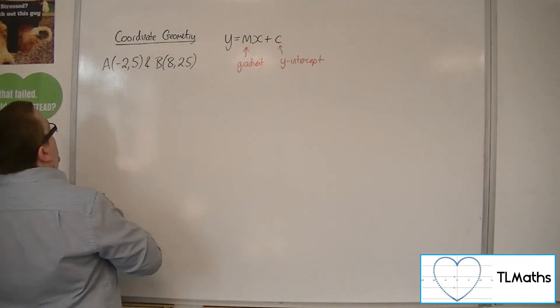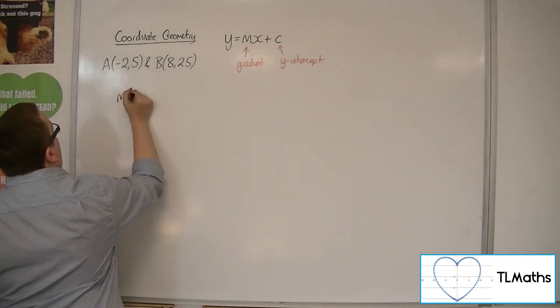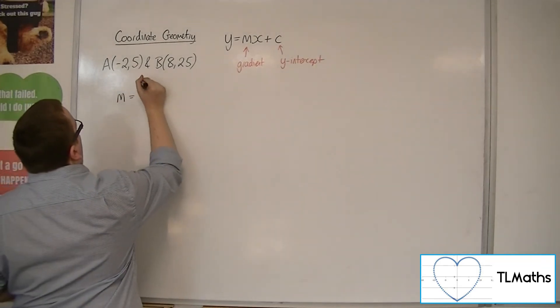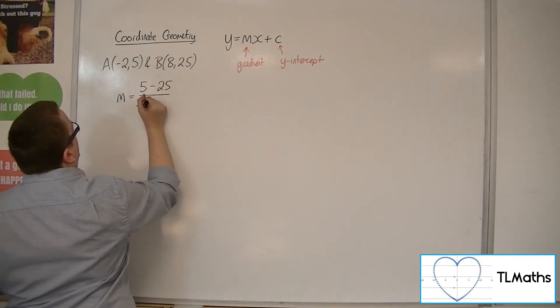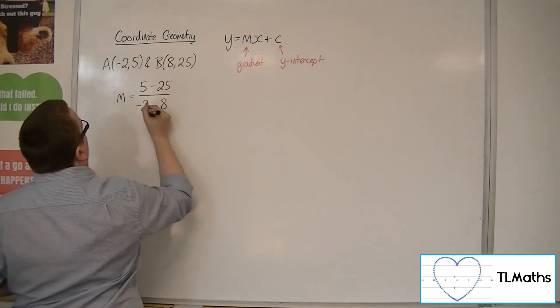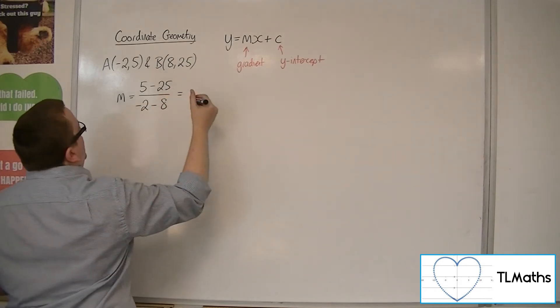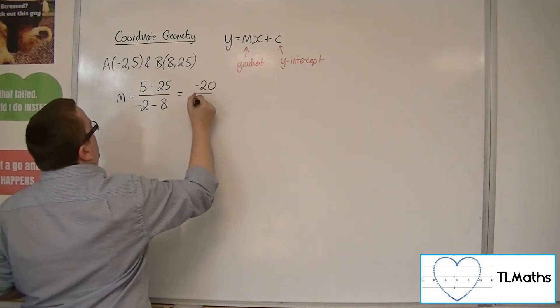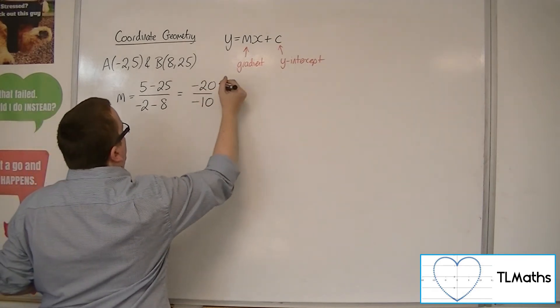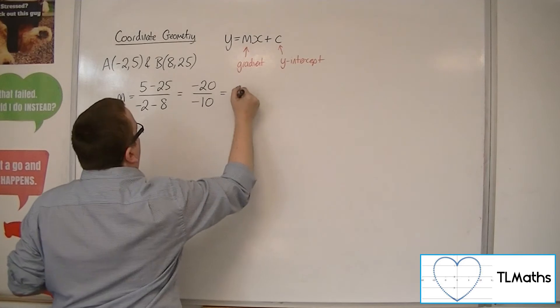So the first thing to do is to find m. The difference in the y-coordinates, so 5 take away 25, over the difference in the x-coordinates, minus 2 take away 8. 5 take away 25 is minus 20. Minus 2 take away 8 is minus 10. So minus 20 divided by minus 10 is 2.